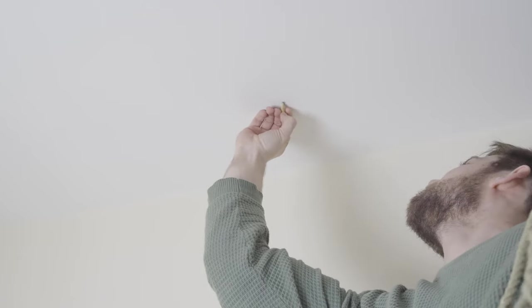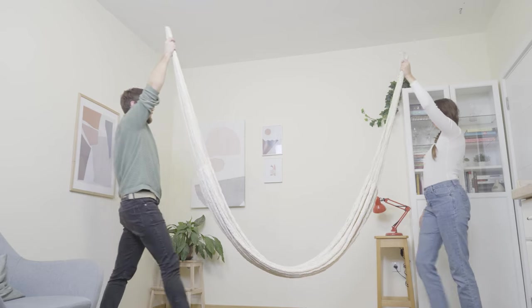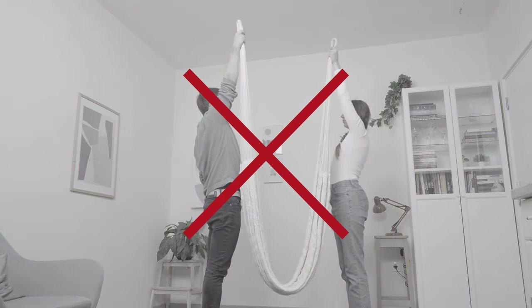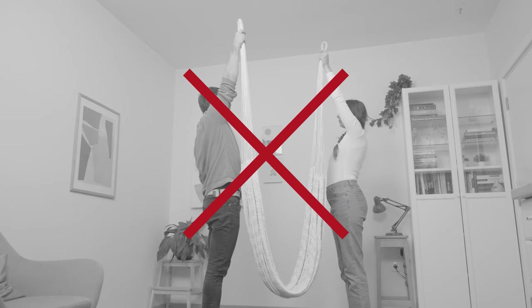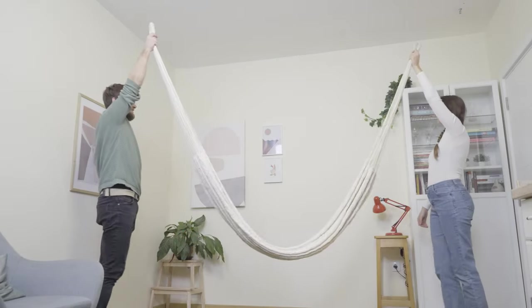When marking the first hole, also consider the position of the second hole. Keep them spaced apart enough to prevent the hammock from bending too much, which can restrict the space inside the hammock.